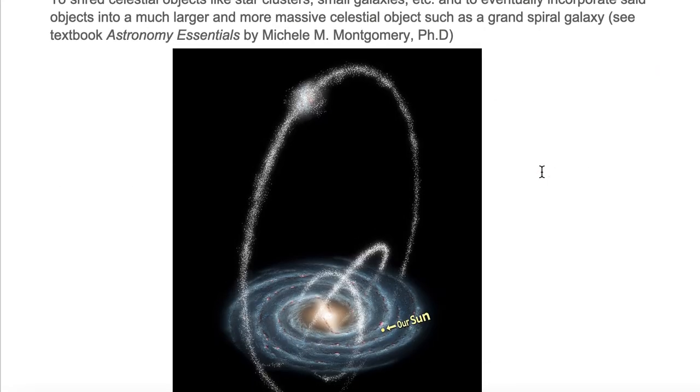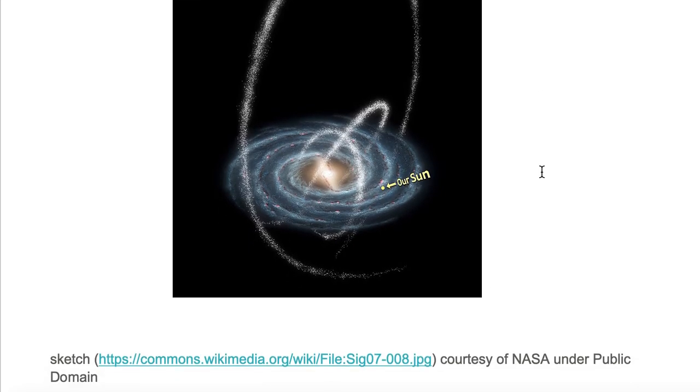Let's take a look at cannibalization in our own Milky Way galaxy. Here we have a sketch of our Milky Way galaxy, which I will abbreviate with MWG. The approximate location of our solar system is as indicated.